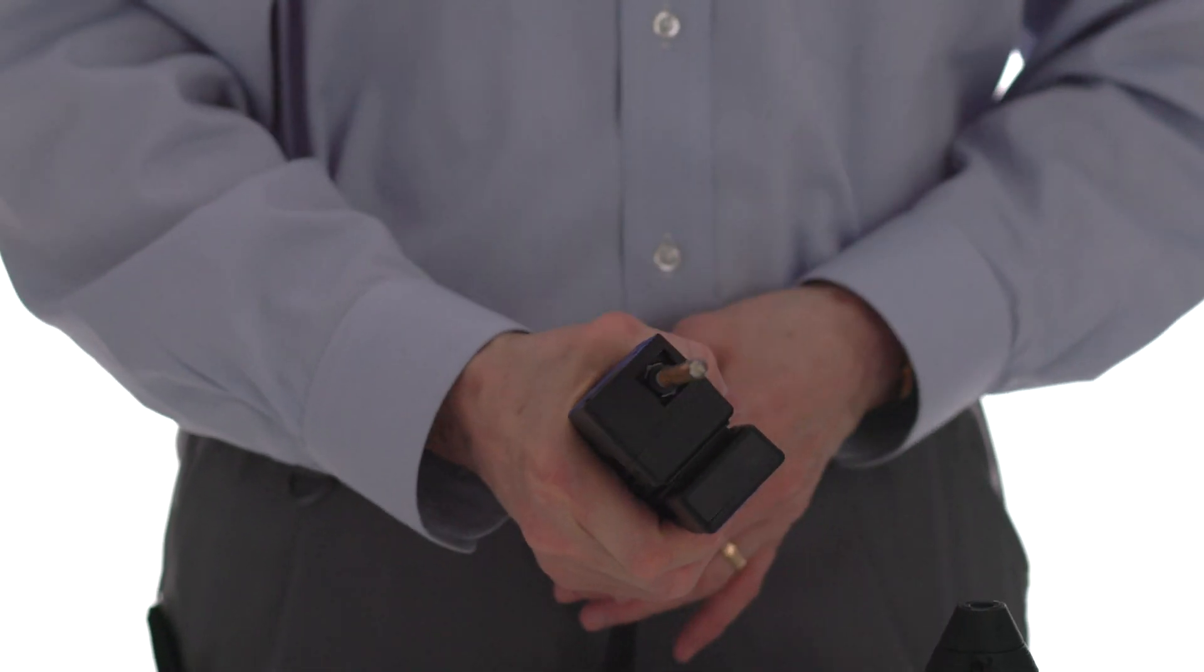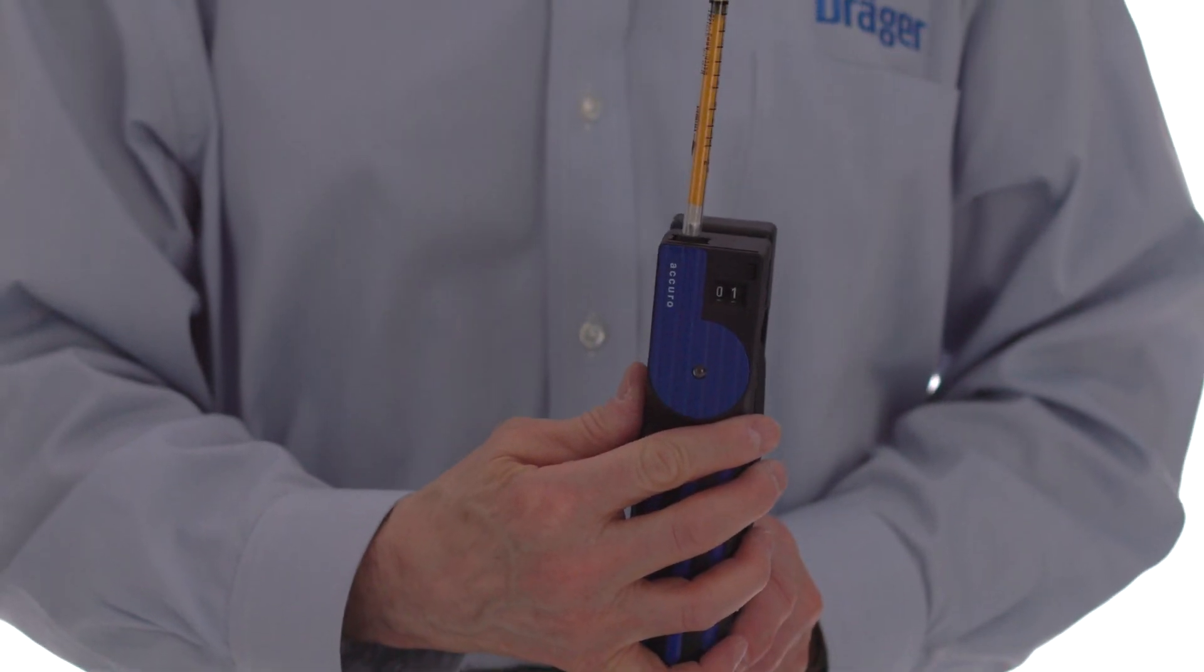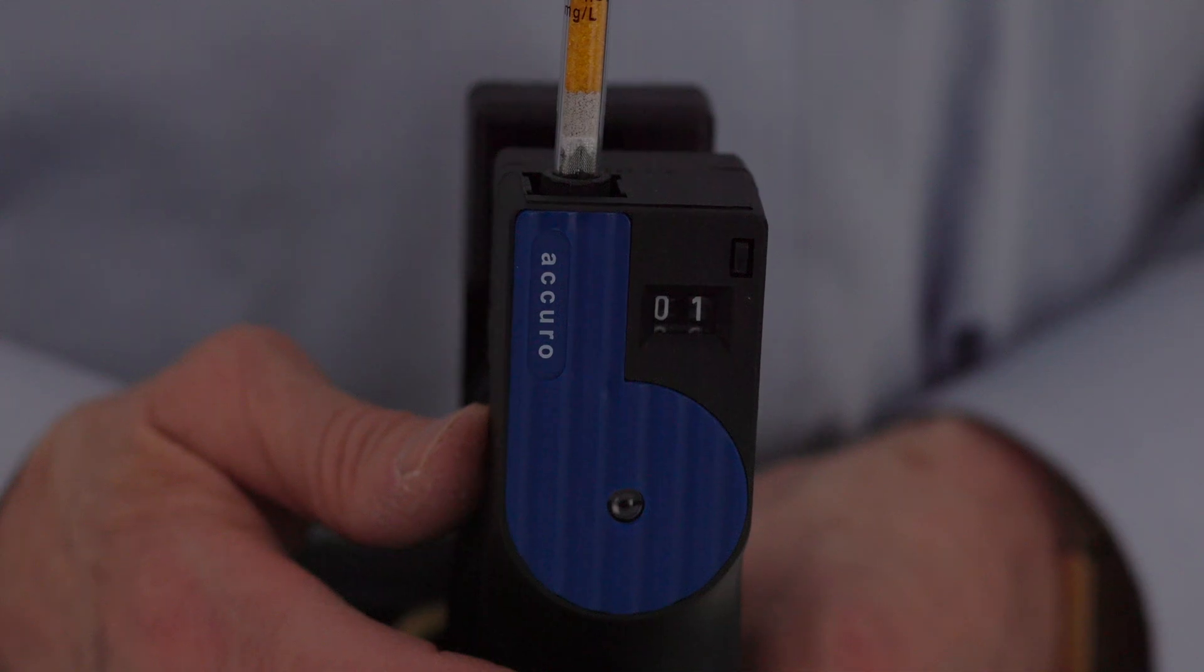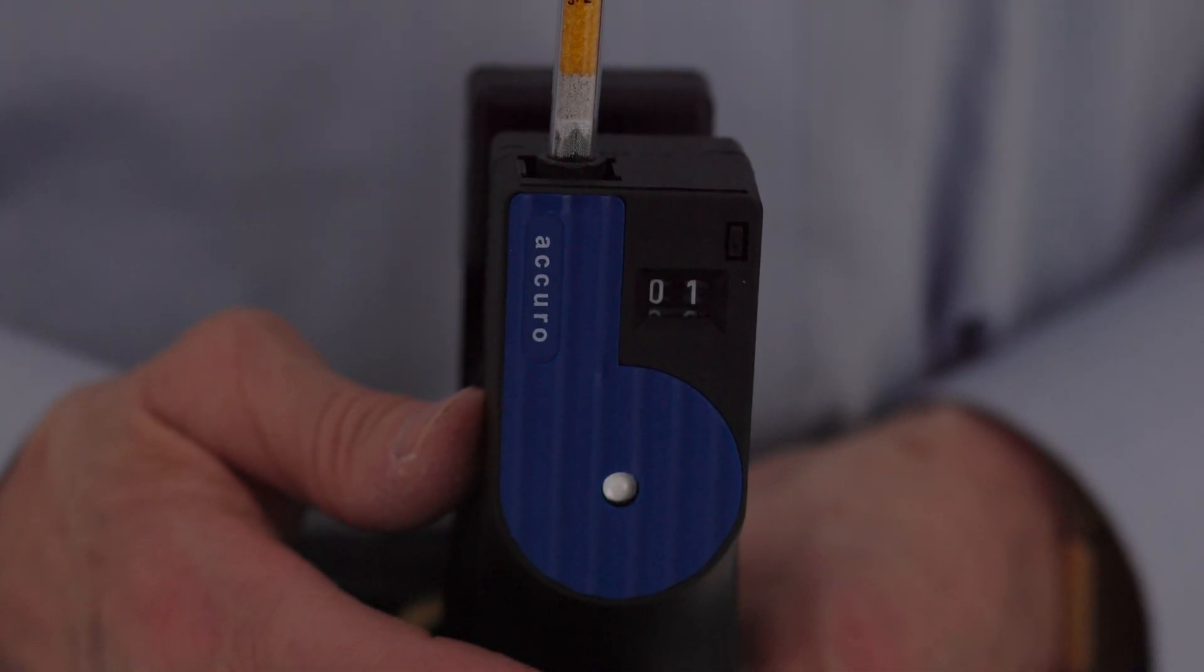Grip the pump and compress the bellows completely. The stroke counter will advance. Release the bellows and air will be pulled through the tube. The stroke indicator turns black when you compress the bellows and pops up white when the pump stroke is complete.